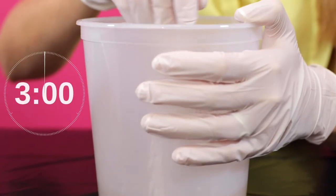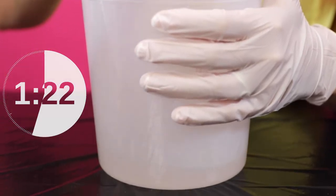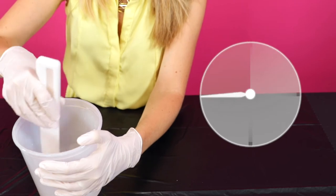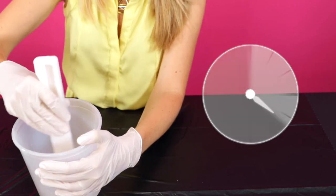Stir your resin and hardener mixture thoroughly for at least 3 full minutes. You'll have about 45 minutes of working time to spread it before it starts to cure.